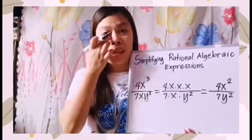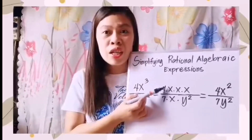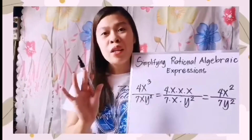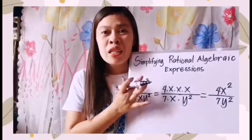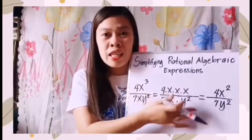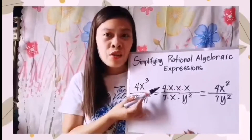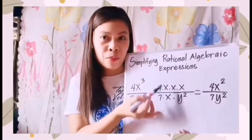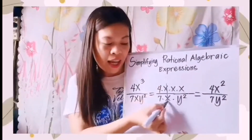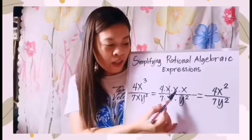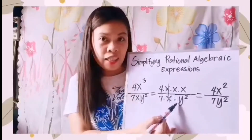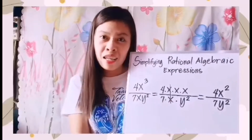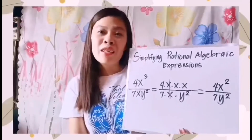Looking at the numerator and denominator: 4 and 7 are not common. We have x in both, so they are common — divide that out. The remaining two x's in the numerator have no match. For y squared in the denominator, there is no y in the numerator, so nothing more to divide out.